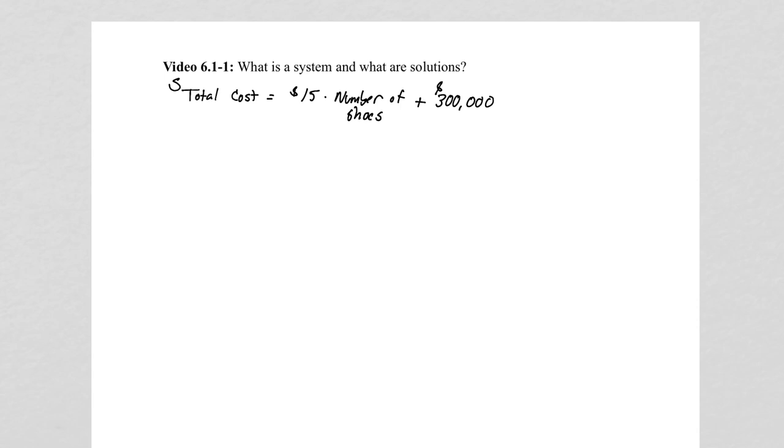And then let's say the amount of money that they make, this total cost is in dollars. Say the amount of money that they make, we usually call that the revenue that a company makes. It's going to be the price that they can charge for a shoe, say they charge $70 for those shoes.